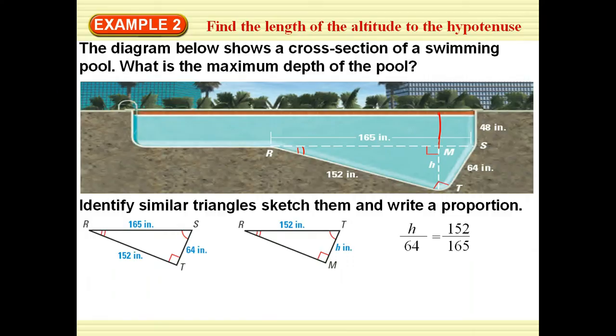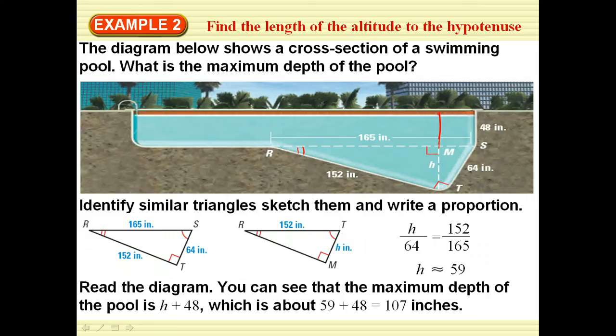I can see that H is to 64 as 152 is to 165. So I simply find my cross product and find out that H is approximately 59 inches, and therefore the entire thing is the H plus the 48, which would be 107 inches.